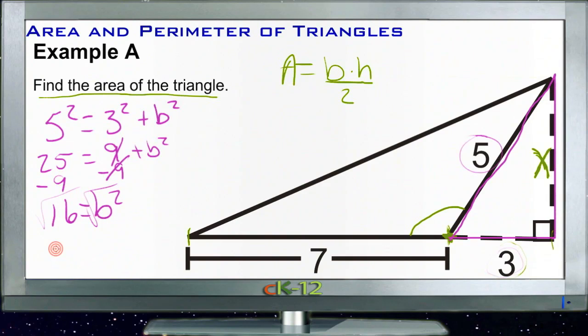If we take the square root of that, we get either positive or negative 4. Obviously this isn't negative 4 centimeters long, or units long, whatever those units are. So we know it's going to be positive 4 units long. So 4 is b.